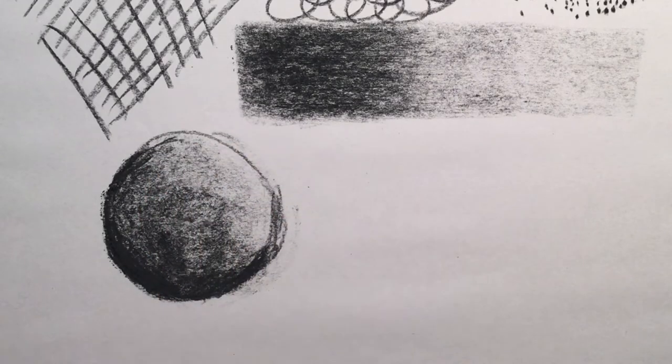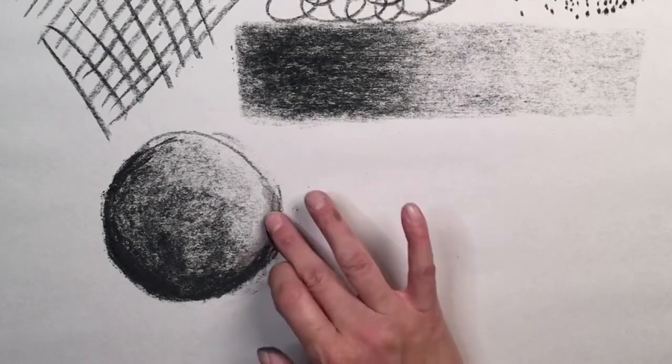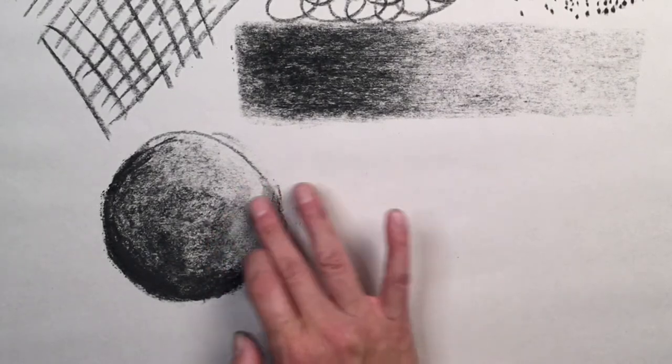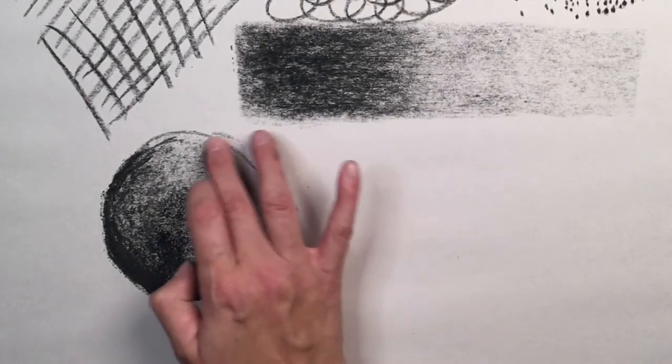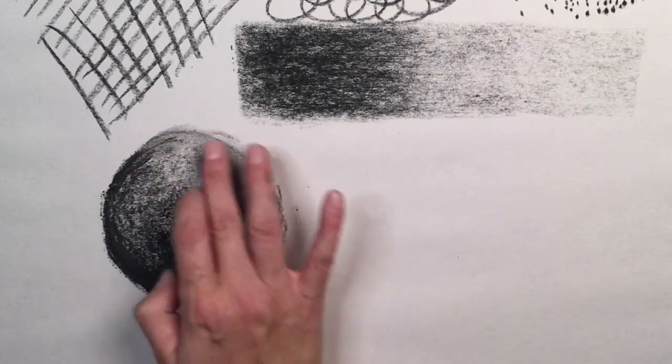Next I'm going to use my fingertip to just blend in all of these areas and hopefully create a smoother transition of dark to light. Mostly focusing on those dark areas for now.